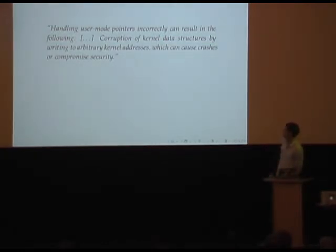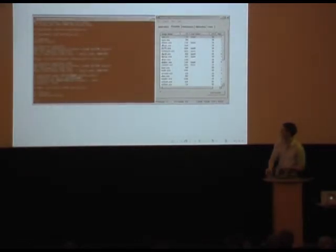If you're on user mode addresses in kernel mode code, so there are so many instances in virtually every single driver, I just simply can't go through them all or enumerate them all. It wasn't ever my intention to be completely complete. That is to document every vulnerability. I'll leave that to the community. So Microsoft's statement is handling user mode pointers incorrectly can result in the following: corruption of kernel data structures or writing to work between kernel addresses, which can cause crashes or compromise security. So, how does Deslock fare against that? Well, as it happens, not well. I did consider videos. But I didn't do them for two reasons. One, I'm rather lazy. And two, you can get the source code for this anyway.